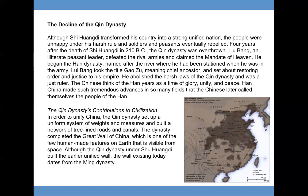The Qin Dynasty's Contributions to Civilization. In order to unify China, the Qin Dynasty set up a uniform system of weights and measures and built a network of roads and canals. The dynasty completed the Great Wall of China, which is one of the few human-made features on Earth visible from space. Although the Qin Dynasty under Shi Huangdi built the earlier unified wall, the wall existing today dates from the Ming Dynasty.